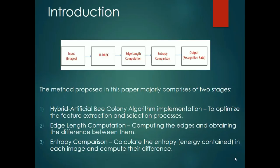The edge-length of the morphed image, along with the entropy of the sum of edge-lengths, are compared with the original edge-length. If the difference obtained is negligible, the person depicted in both images can be inferred to be the same. Otherwise, the images depict different people.